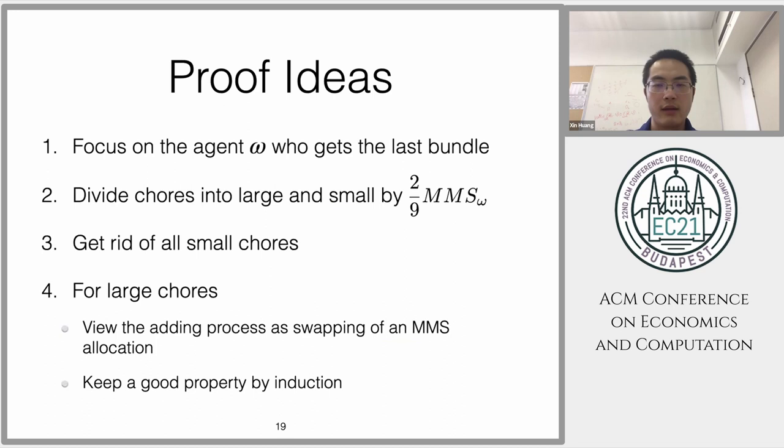Here are some proof ideas. For this framework, first we focus on one agent—the agent who gets the last bundle. Then we can get rid of all the small chores, where small chores are less than 2/9 maximum share. For large chores, we can view the whole processing of adding into the bundle with a swapping of allocation, where the original allocation is a maximum share. Then we keep some good properties by induction.